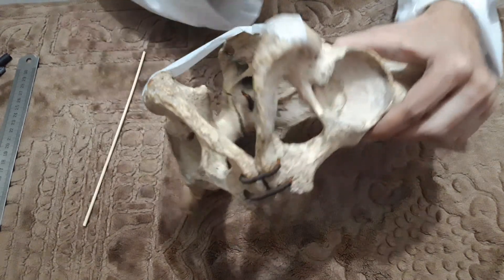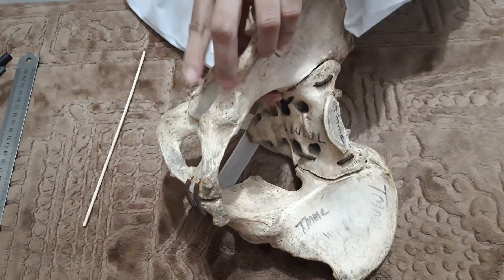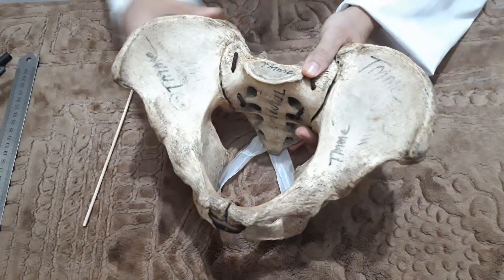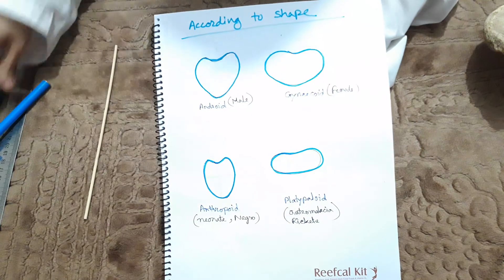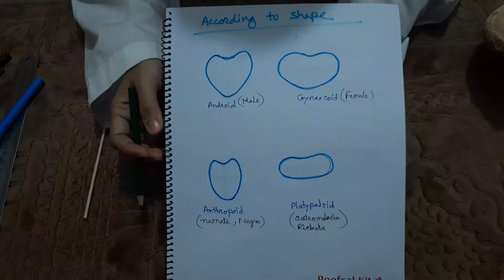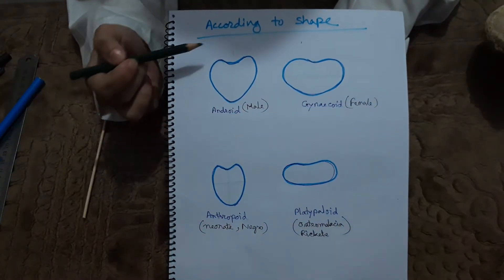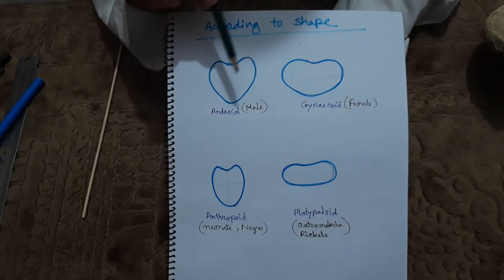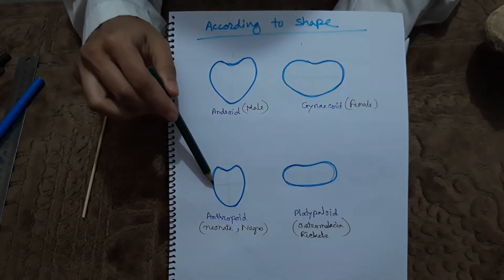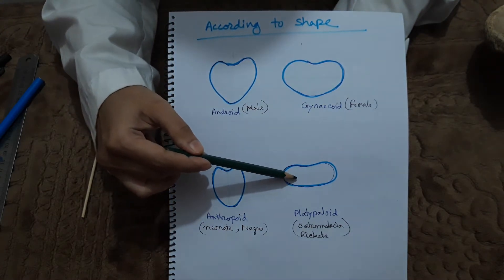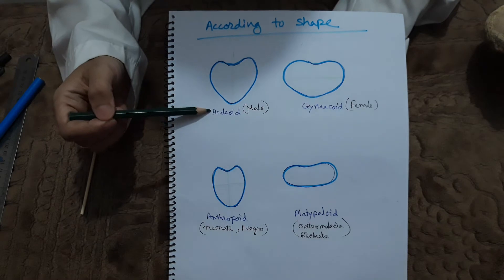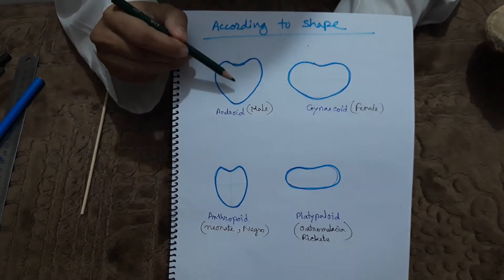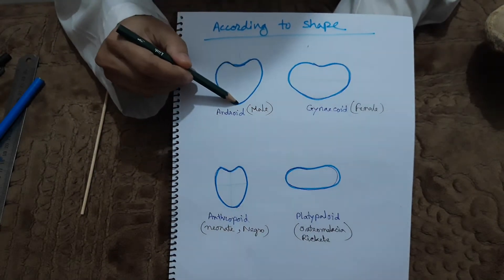This is the pelvic inlet classification. There are four types of pelvic inlet: android, gynecoid, anthropoid, and platypelloid. The android pelvis has the sacral promontory projecting toward the pubic symphysis, narrowing the anterior segment.